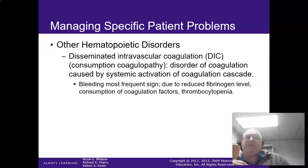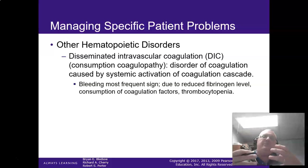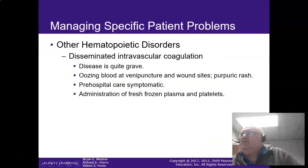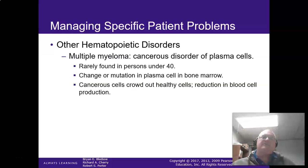DIC — disseminated intravascular coagulation: bleeding is the most frequent sign. It's usually caused by systemic activation of the coagulation cascade. This is very common in trauma patients after the body has been attempting the clotting process for a long time. The problem is it's usually a death sentence for your trauma patients. Pre-hospital care is very symptomatic — they need fresh frozen plasma or platelets. That's usually why those are hung in the trauma bay, to prevent DIC from developing.